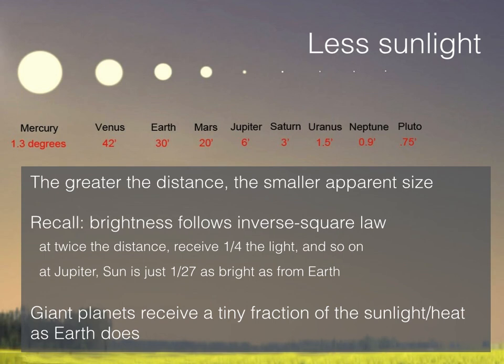The farther away you go from the sun, the less sunlight you get. Remember that sunlight decreases due to the inverse square law, and that's true of any light source. So by the time you are at Jupiter's distance, the sun is much smaller in the sky and you're receiving considerably less light — not a linear amount, but going off as one over the distance squared, so it really drops off very rapidly. Jupiter is getting just about one twenty-seventh as much sunlight as Earth, and yet it's got all of that weather.